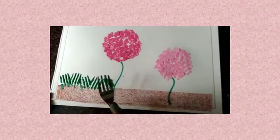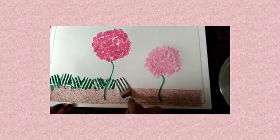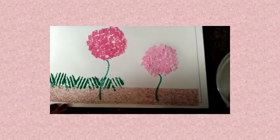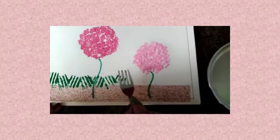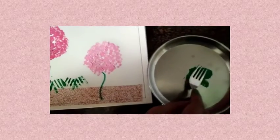So this way, with your green color and using the fork, we are making the grass. Just move it across the page.